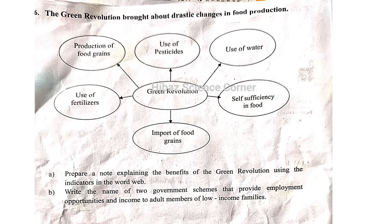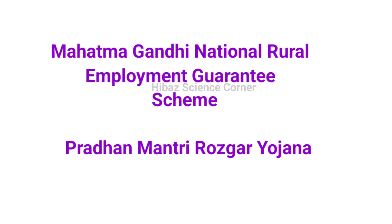Name two government schemes that provide employment opportunity and income to adult members of low-income families. The answers are: Mahatma Gandhi National Rural Employment Guarantee Scheme (MGNREGS) and Pradhan Mantri Rojgar Yojana (PMRY).